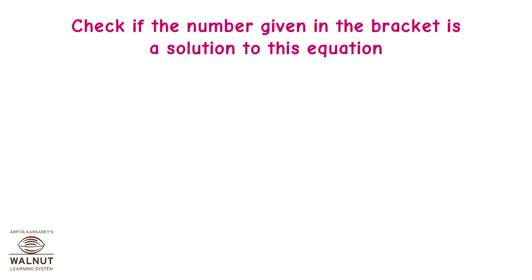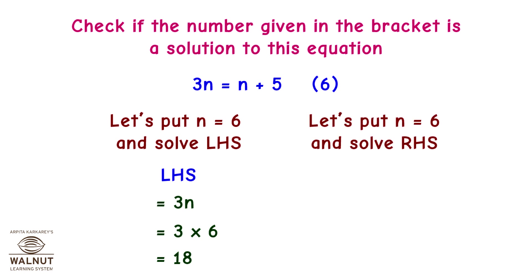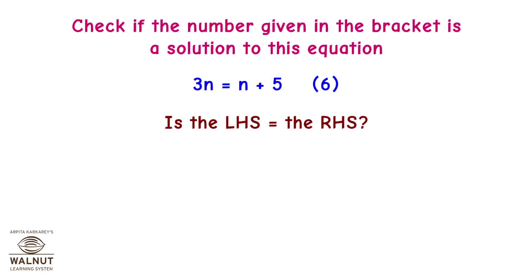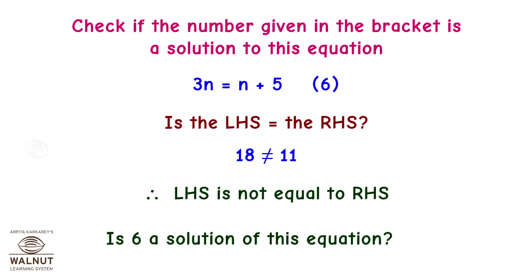Consider another equation: 3n equals n plus 5, bracket 6. Let's put n equals 6 and solve. LHS equals 3n equals 3 into 6 equals 18. RHS equals n plus 5 equals 6 plus 5 equals 11. Is LHS equal to RHS? 18 is not equal to 11, therefore LHS is not equal to RHS. Is 6 a solution? No.